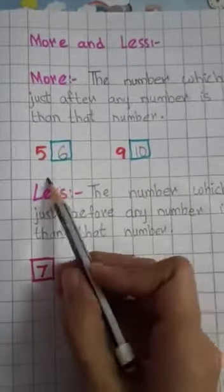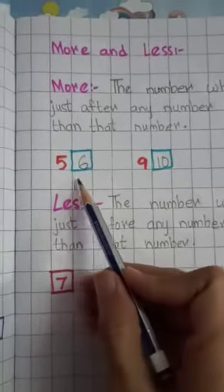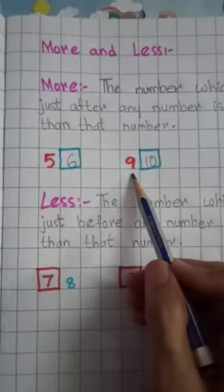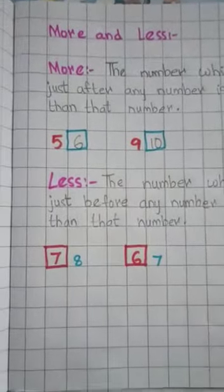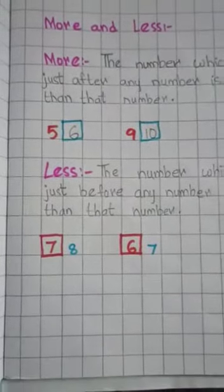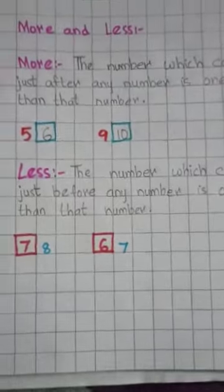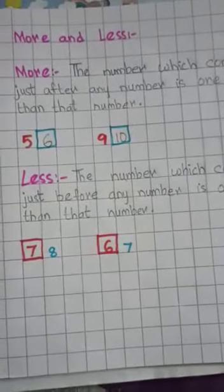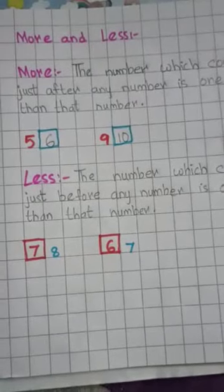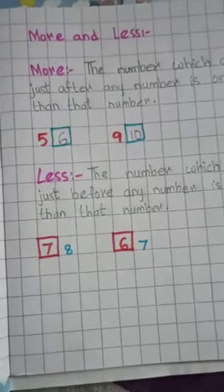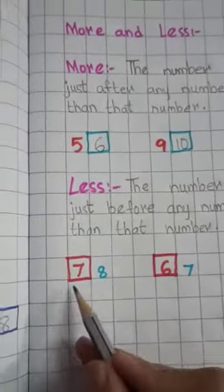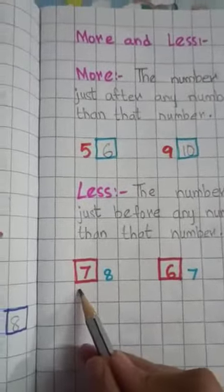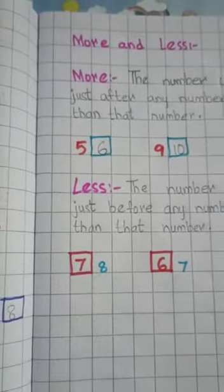Next, before numbers: the number which comes just before the existing number. After numbers: the number which comes just after the existing number. Between numbers: the number which comes between two numbers. More and less — the number which comes just after any number is one more than that number. What is one more than 5? 6. What is one more than 9? 10.